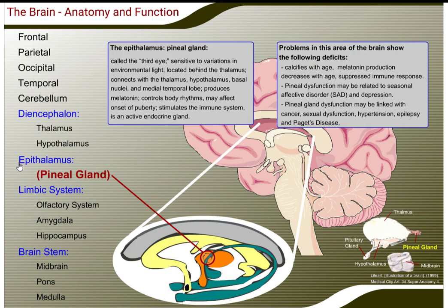Called the third eye, the pineal gland is sensitive to variations in environmental light. Located behind the thalamus, it connects with the thalamus, hypothalamus, basal nuclei, and medial temporal lobe. It produces melatonin, controls body rhythms, may affect the onset of puberty, stimulates the immune system, and is an active endocrine gland.